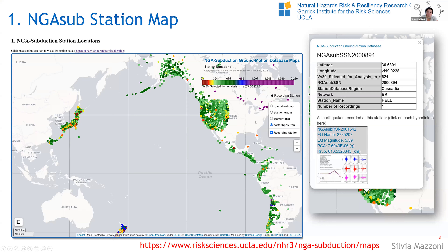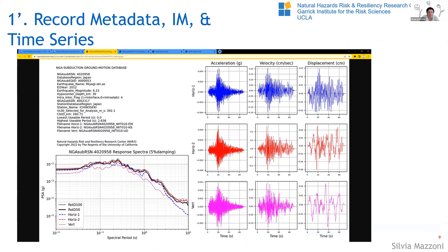If you're trying to look around and understand how NGA subduction works and how subduction data works, this is a very useful map. For each record you can visualize the three components — acceleration, velocity, and displacement — and the spectra, along with some relevant metadata. We have this for every record, and you can access it through the station data map as well as the epicenter map.